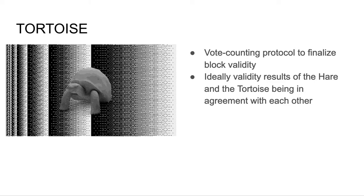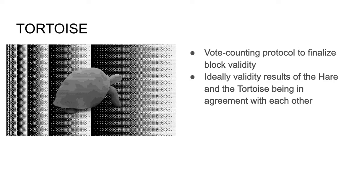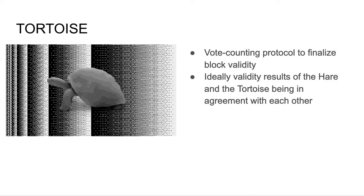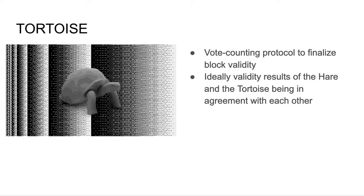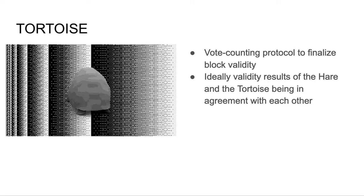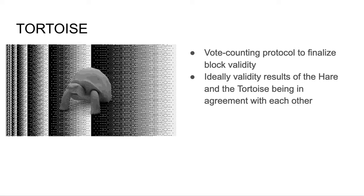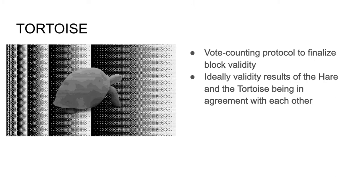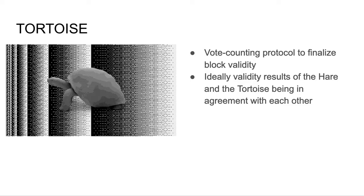The TORTOISE is a vote-counting protocol used to finalize block validity. For each block, the TORTOISE constantly tallies all votes, both for and against it. Once a confirmation threshold is passed, it announces whether a block is valid or invalid. Ideally, the validity results of the HARE and TORTOISE should agree. However, the TORTOISE guarantees that Smeshers will reach consensus even if the HARE protocol fails. Such a failure is extremely unlikely, but over a long enough time period, even very low probability events may eventually occur. Thus, even though the TORTOISE is slower than the HARE, it ensures that consensus is reached on the entire history of the ledger.